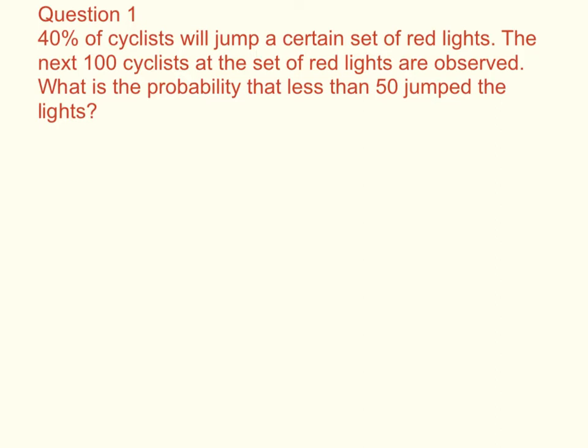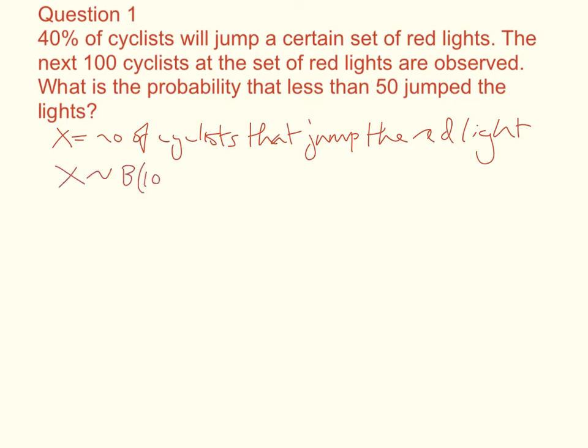So the first step here is to define our random variable, and x is the number of cyclists that jump the red light. We now need to say x's distribution, so x has a binomial distribution where n is 100 and p is 0.4.